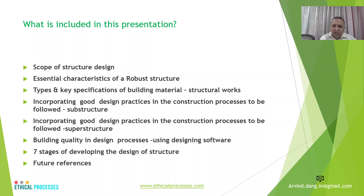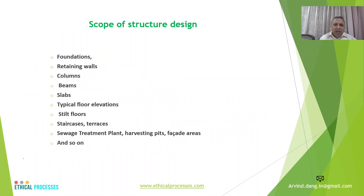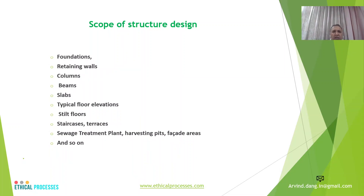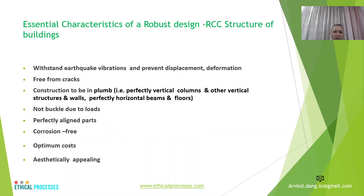Regarding the scope of structure, as we all know, any kind of building has primarily foundations, retaining walls, columns, beams, slabs, typical floors, staircases, terraces, sewage treatment plants, water harvesting pits, and façade areas, among others. Now, what should be the practice of a good robust RCC structure?